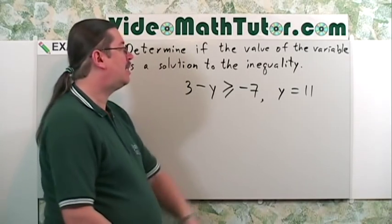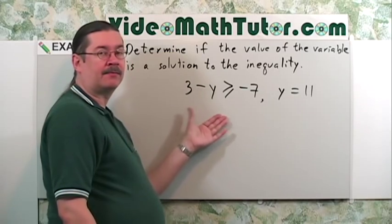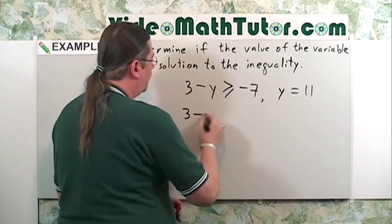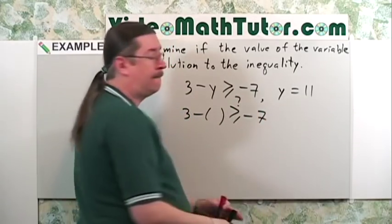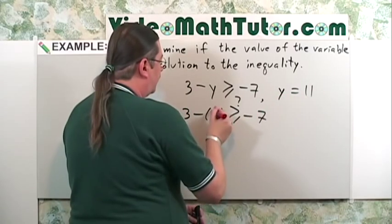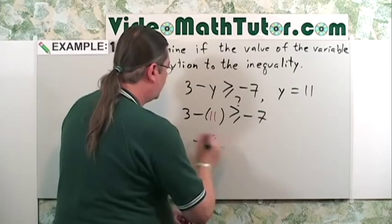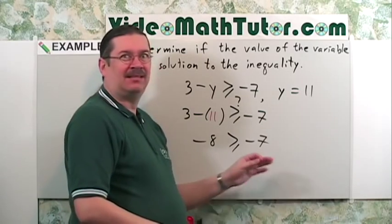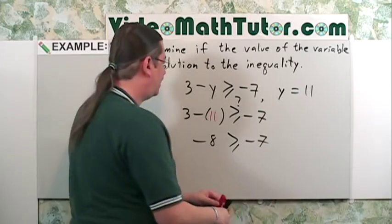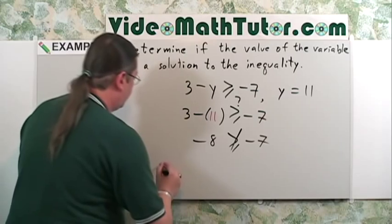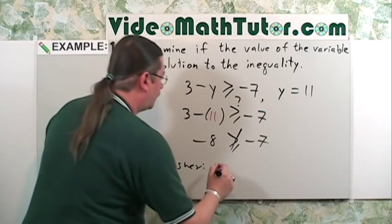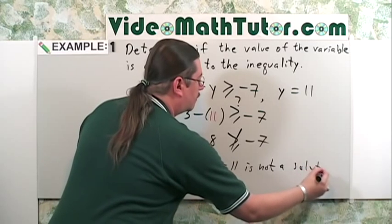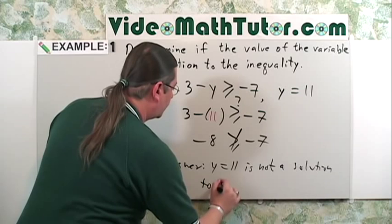Let's try another one. I want to determine if y equals 11 is a solution to this inequality. Like before, we're going to rewrite this as a template: 3 minus something, greater than or equal to negative 7? I'm going to replace the y with 11. This gives me negative 8 is greater than or equal to negative 7. Well, negative 8 is not greater than negative 7 — this is not true. Answer: y equals 11 is not a solution to the inequality.